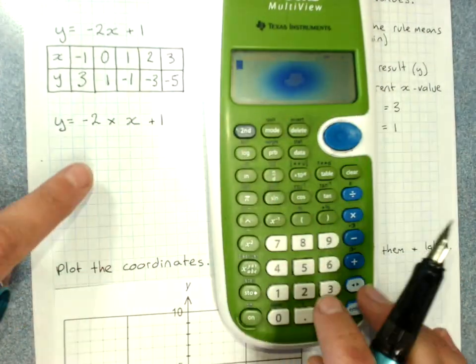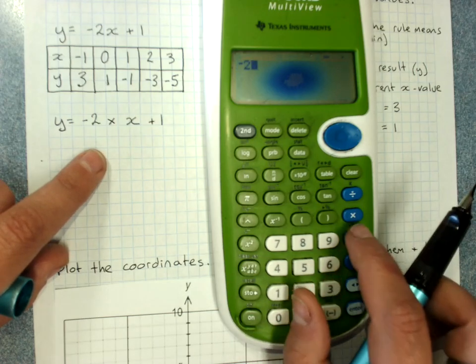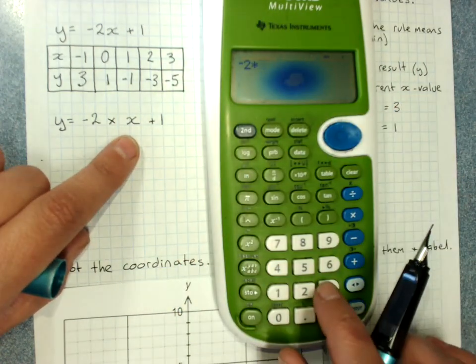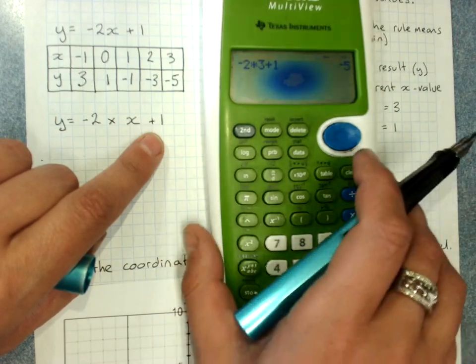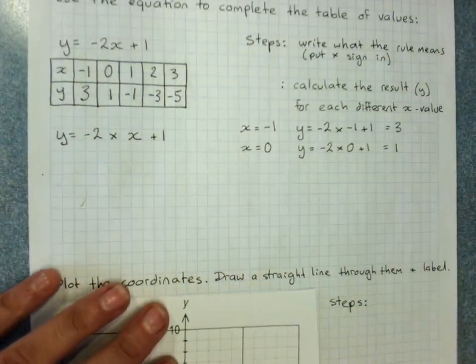Use a calculator. Negative 2 times x is 3, plus 1, negative 5. That's our table of values.